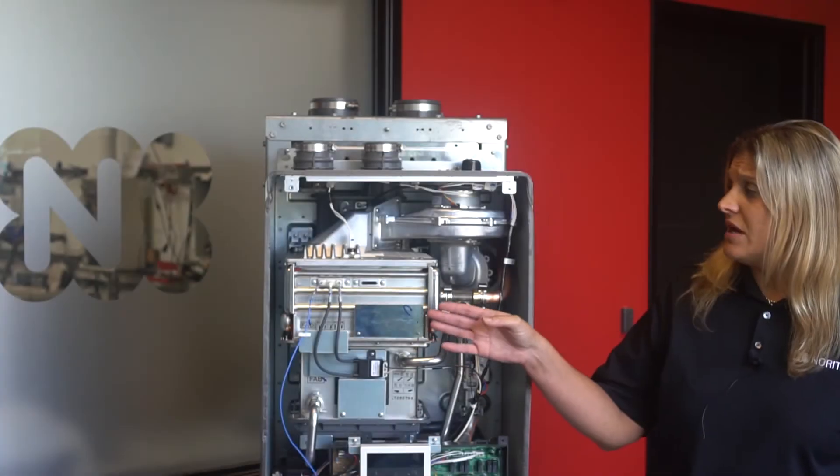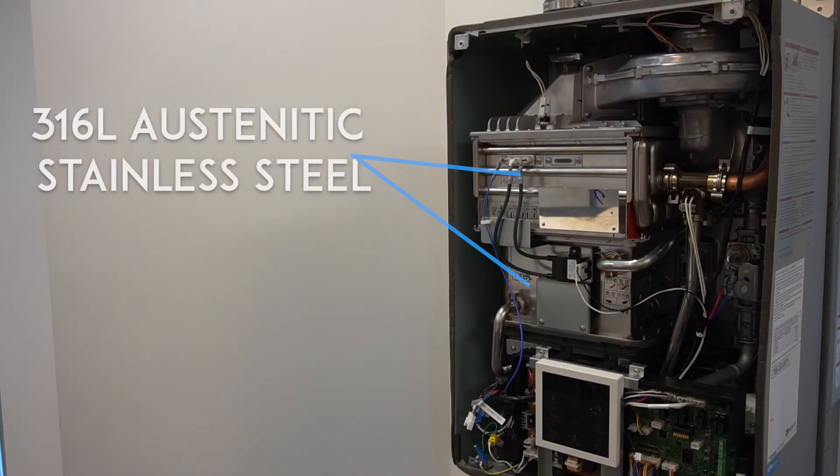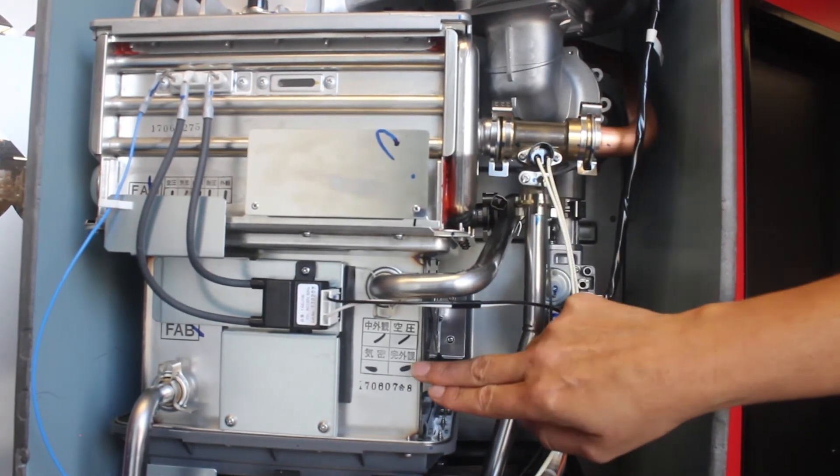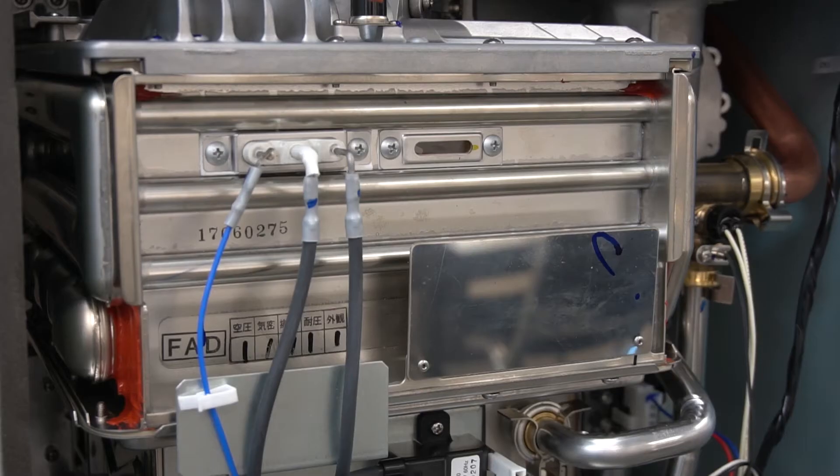Our NORITS NRCB has 316L austenite stainless steel, the only one in the industry for our primary heat exchanger and our secondary heat exchanger. Our plate heat exchanger is also stainless steel.